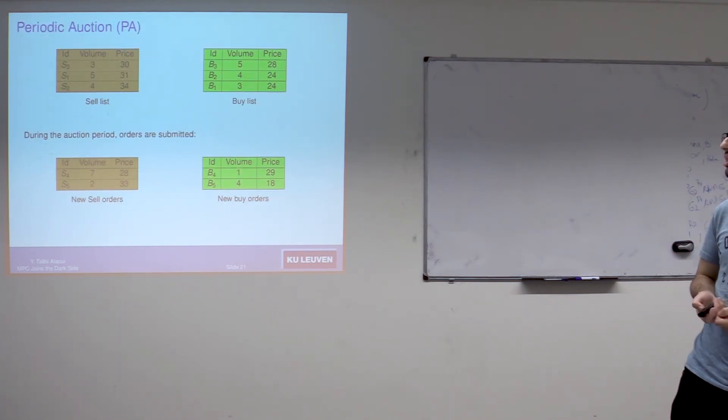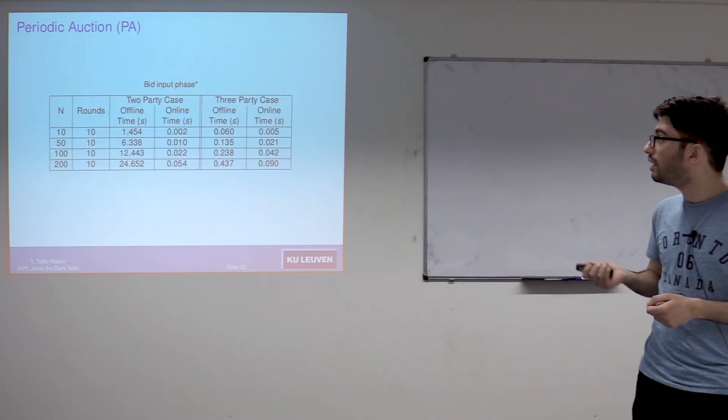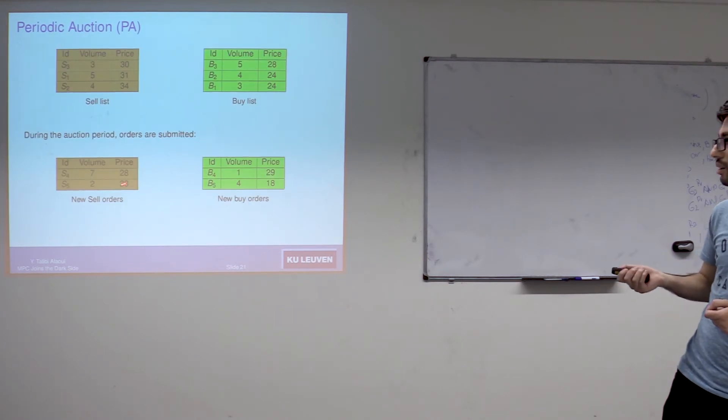For the second algorithm, which is the periodic auction, this one is kind of similar to the first one but with a small difference. Here as well we have two lists: the sell list and the buy list. Now when an order comes in, we don't match it right away. We need to wait for the auction period. Whenever an order comes in, we insert it directly into the list. Then when the auction period passes, we match orders. We just start comparing the first one with the first one, etc., doing the checks like in the first algorithm. The price by which orders are cleared is the price that maximizes the orders traded.